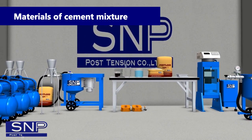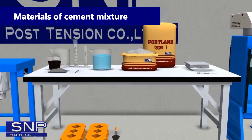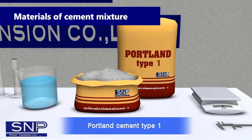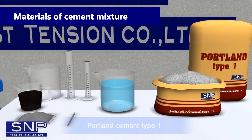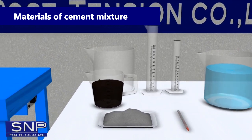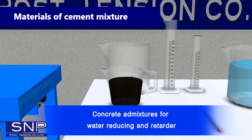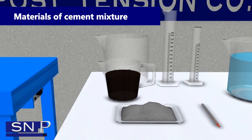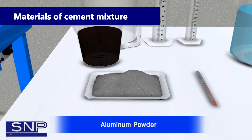Materials of Cement Mixture: 1. Portland Cement Type 1. 2. Clean Water. 3. Water Reducing and Retarding Admixtures. 4. Aluminum Powder.